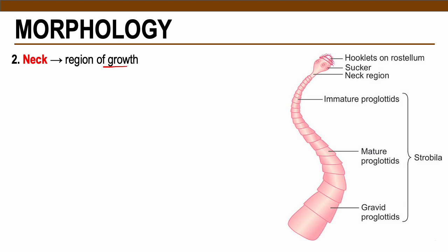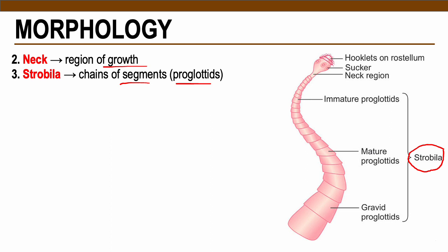The next part is the neck, which is the region of growth for the tapeworm. Next is the strobila — chains of segments called proglottides. The strobila is comprised of three main proglottides: the immature, the mature, and the gravid proglottide.